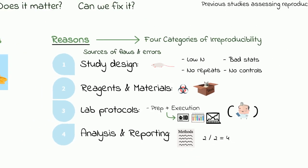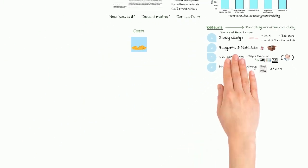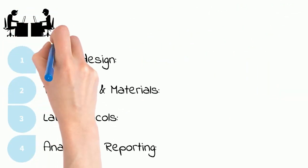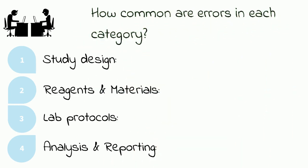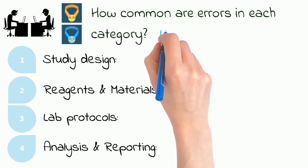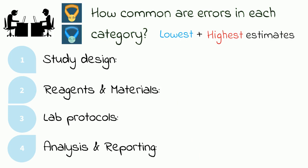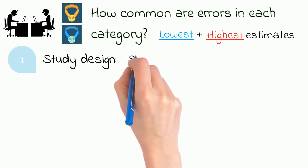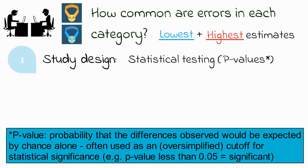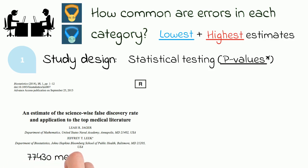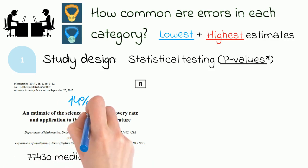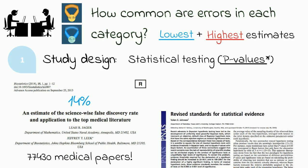So having set up the four different categories from which irreproducibility could arise, it's time to see how much each one really affects it. The researchers went through several review studies that assessed the prevalence of errors in each category and selected one or two that they felt best fit a specific category to find the lowest and highest estimates of errors. For study design, the authors used two studies evaluating statistical testing methods — specifically the use or misuse of p-values. They got their low estimate from a 2014 analysis of more than 75,000 medical papers, estimating a false discovery rate of 14%. For the high estimate, they cited a mathematical study which calculated the likelihood of reporting false results as being up to 25% if researchers used a cutoff rate for statistical significance of 0.05, which is and has long been the standard in biology.